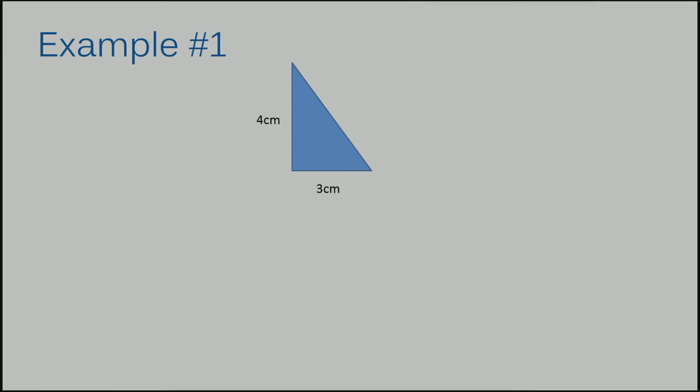Let's move on to example number one. For this example I have a triangle that has a base of three and a height of four. So I'm going to rewrite my formula area equals half times base times height. Area equals half. I don't know my area so I just rewrite it. My base is three.